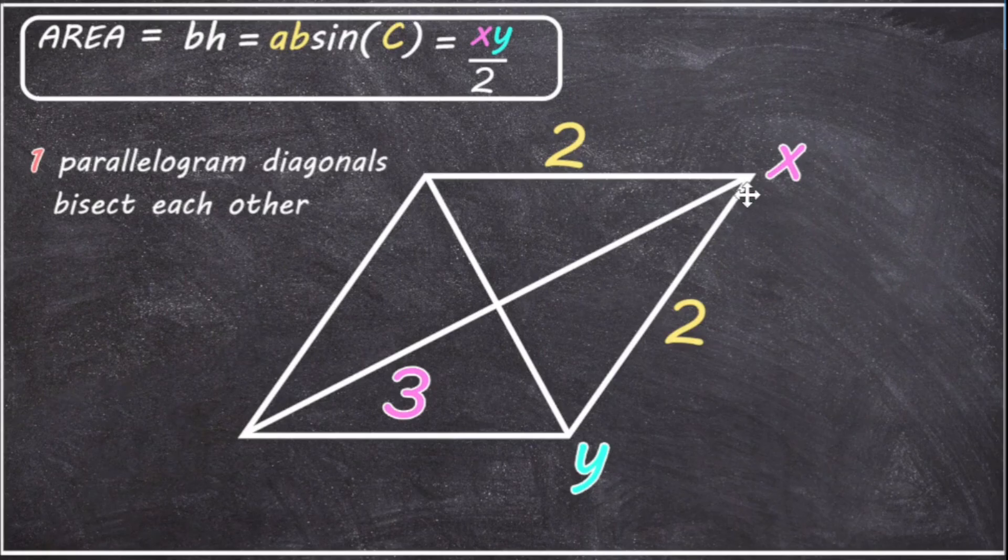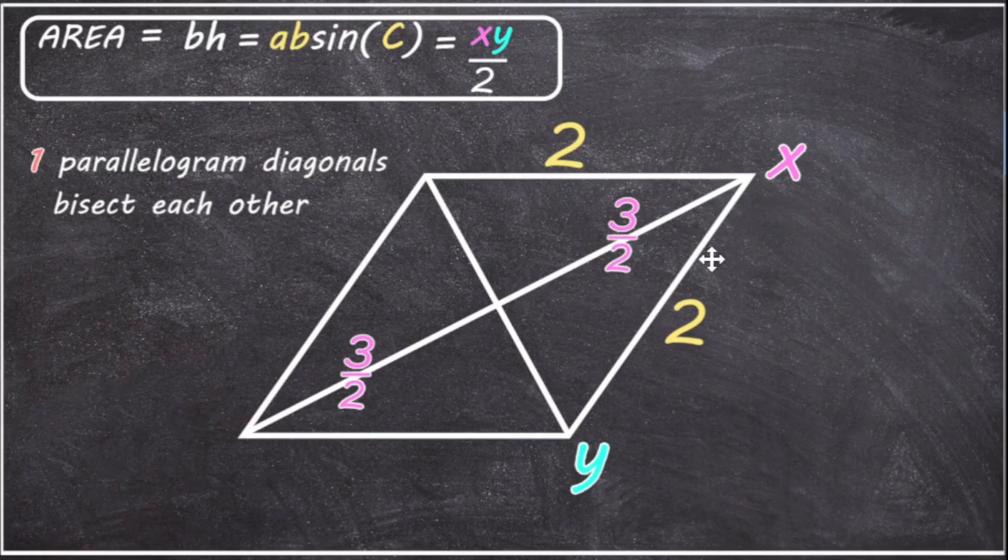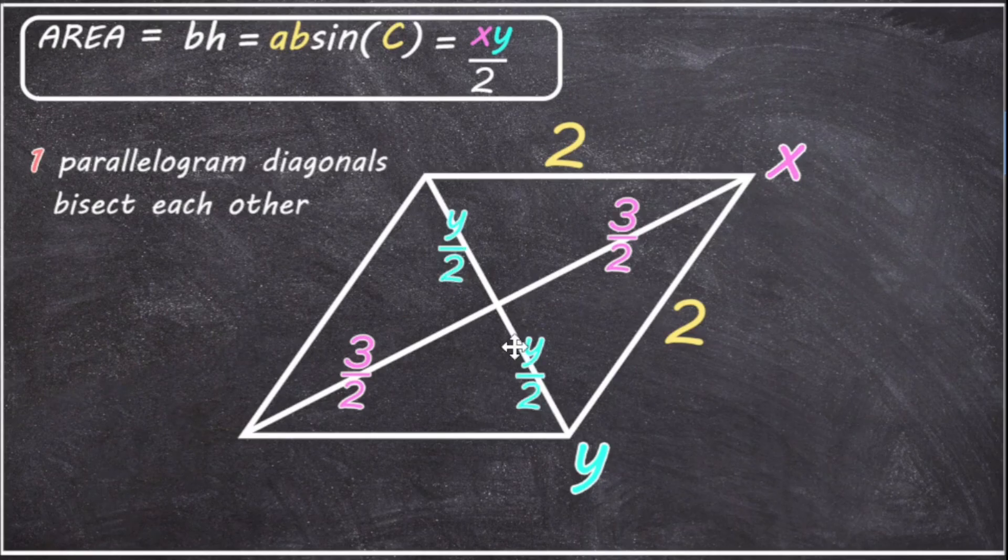So now the X diagonal, which originally had the length of three, is divided into two halves. So each section of the diagonal has a value of three over two, and I'll leave them as fractions. Now even though we don't have a value for Y, we know that Y must be split into two because the diagonals bisect each other. So we can still rewrite that as two lengths of Y over two.